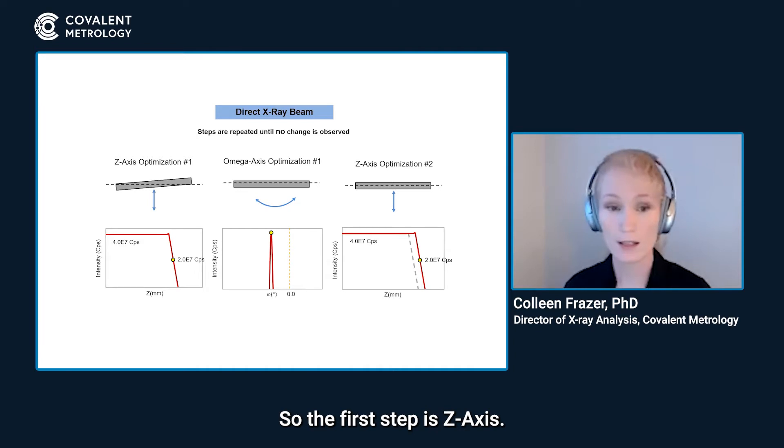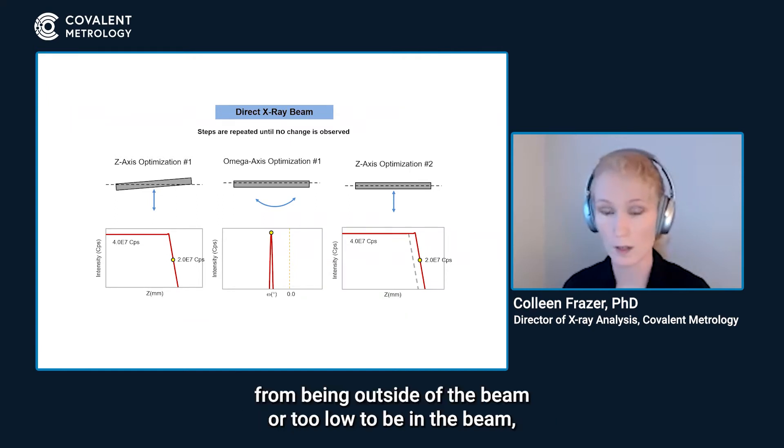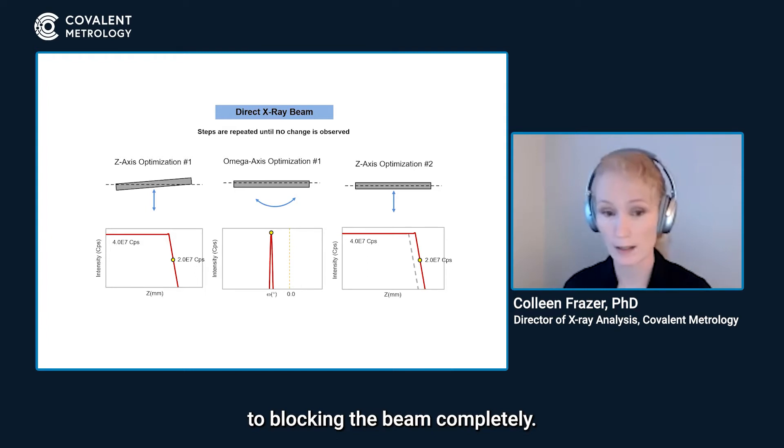The first step is Z-axis. If you're familiar with the diffractometer, the Z-axis is the height of the sample in the beam. We're bringing the sample up from being outside of the beam or too low to be in the beam to blocking the beam completely. The plot of that is on the lower left.